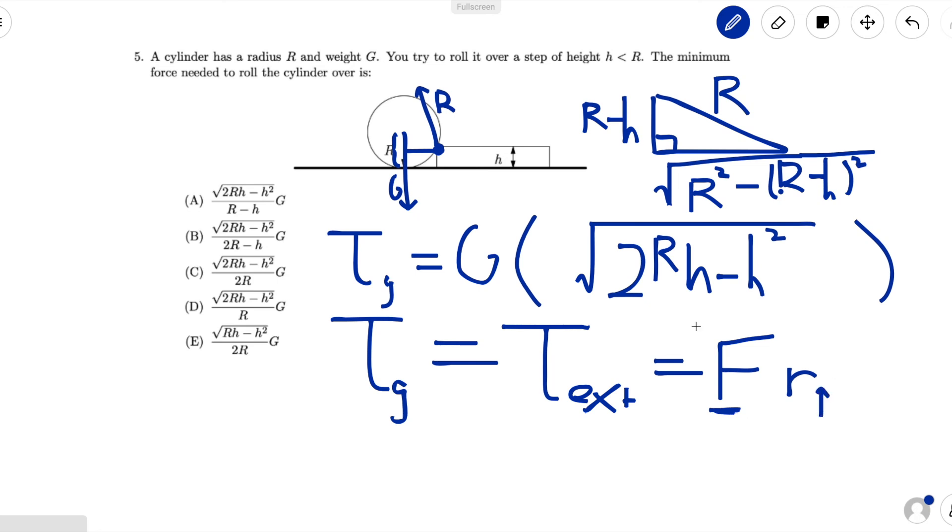Therefore the best place to apply the force is the point diametrically opposite from the contact point between the cylinder and the step, which is right here. At this point the length of the lever arm is 2r, so this is equal to f times 2r.